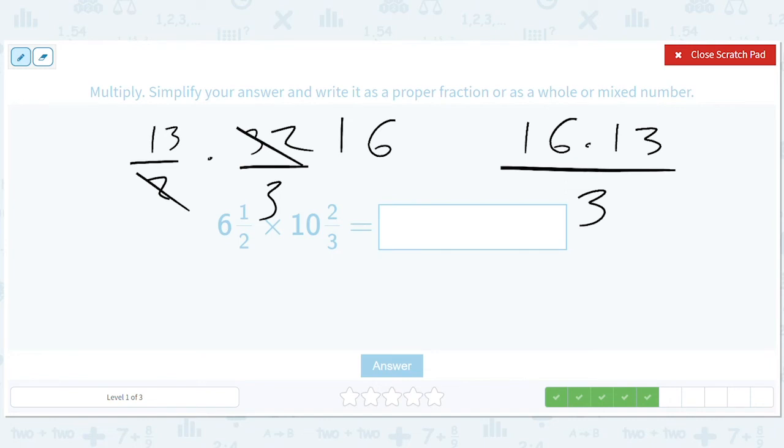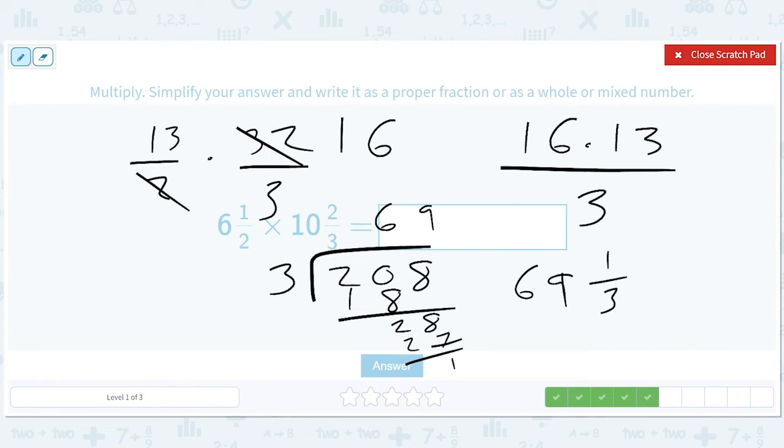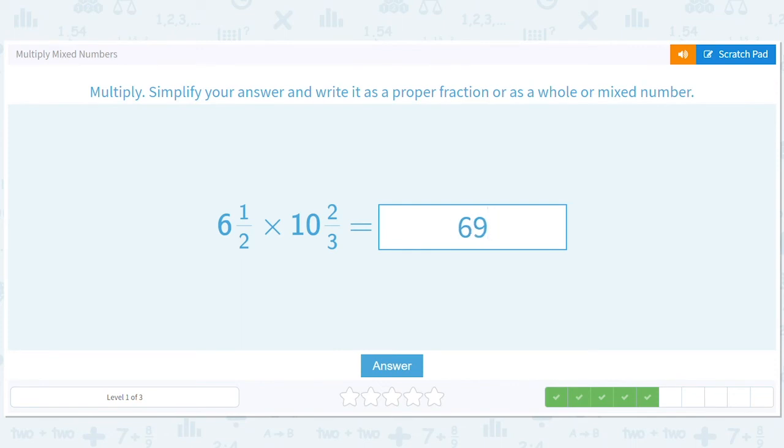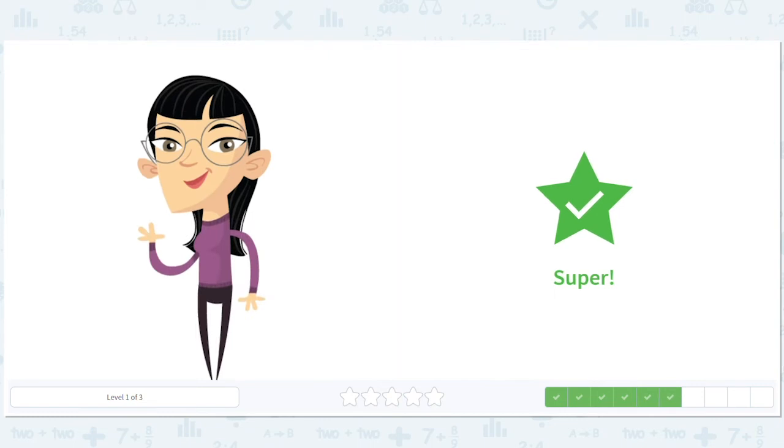So we get sixteen times thirteen divided by three. I can do sixteen times thirteen, it's one-sixty plus forty-eight. So it's two-oh-eight divided by three. Let's just check though, I don't want to get things wrong. Sixteen times thirteen, two-oh-eight. So now we get six, we get eighteen. We get nine. So we get sixty-nine and a third. Check our work, yes, so sixty-nine and one-third.